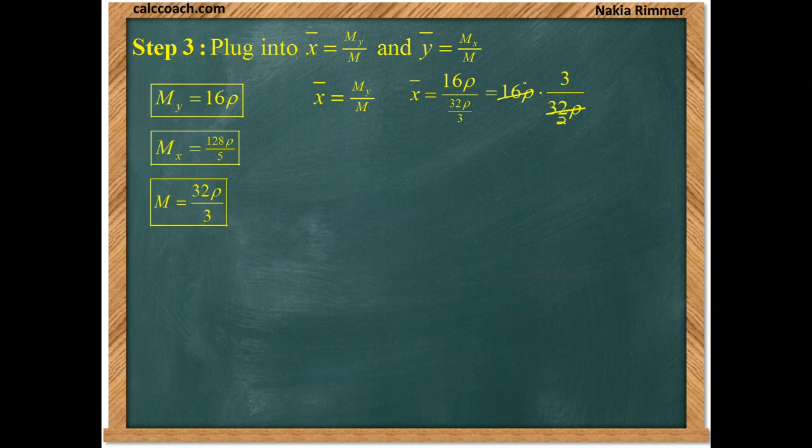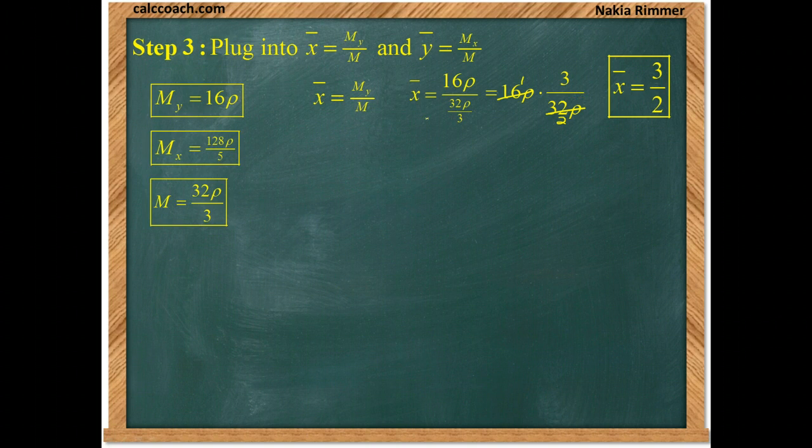Essentially, 16 rho becomes a 1. And the answer is 3 halves for the x coordinate of the center of mass, the centroid.